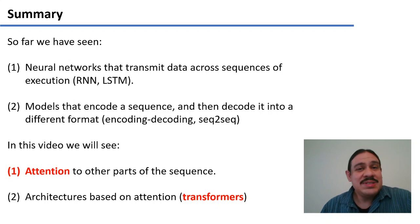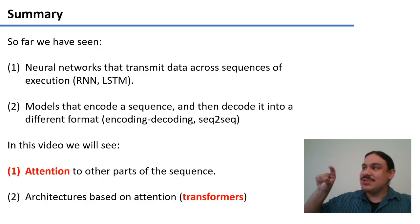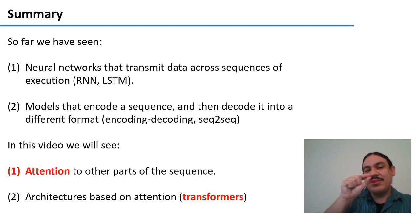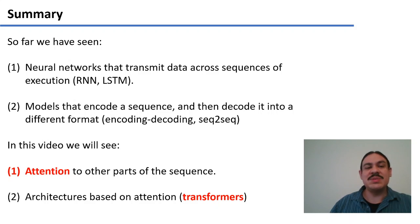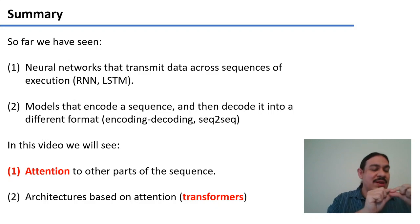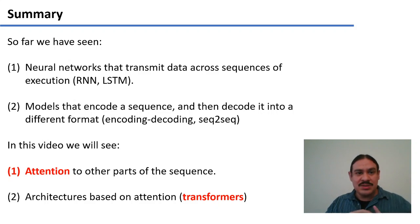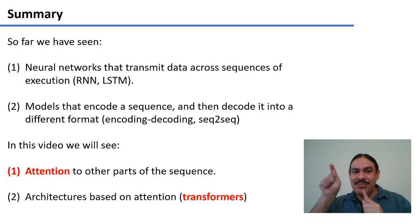So what have we seen so far during the week? We had feed-forward neural networks, which took an input, did some computation with a hidden layer, and produced an output. We also have neural networks that can transmit data across executions of themselves. For example, if you have a sequence of words and you have a recurrent neural network to predict the next word, like I, M,